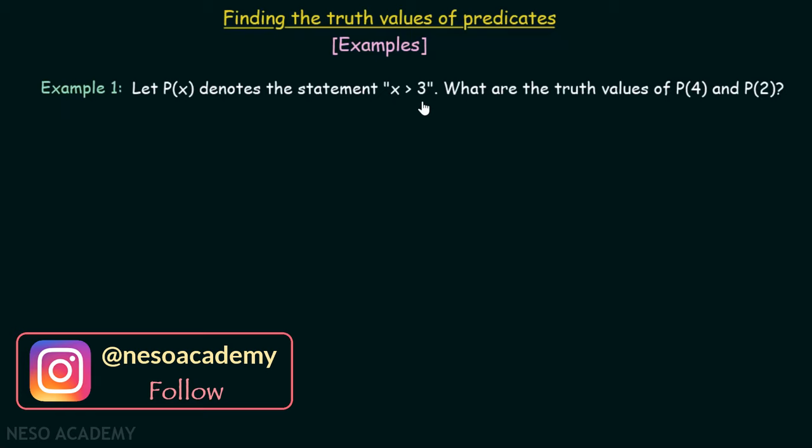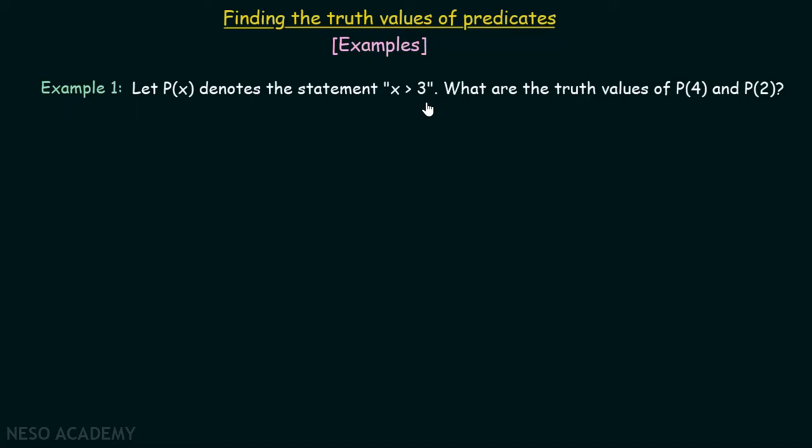Let P(x) denote the statement 'x > 3'. What are the truth values of P(4) and P(2)? We need to identify the truth values of P(4) and P(2) if P(x) is given to us.